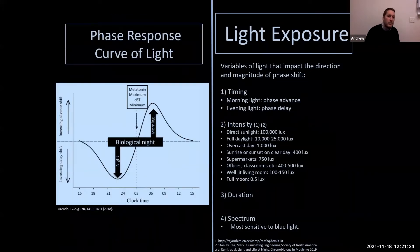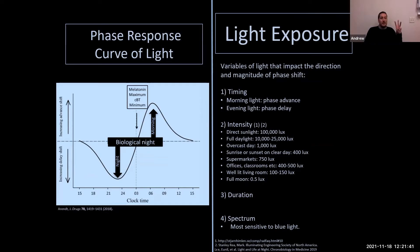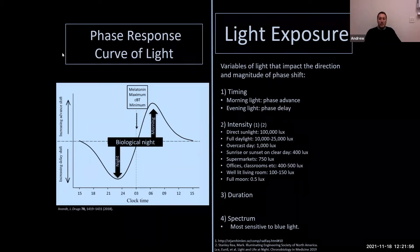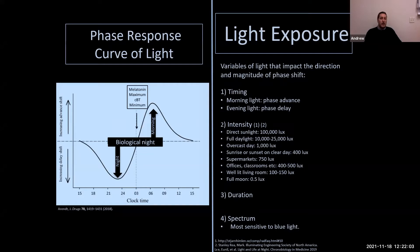There are four variables of light that impact the direction and magnitude of phase shifts: timing, intensity, duration, and spectrum of light. These can be plotted on a phase response curve where the x-axis shows time of day and the y-axis shows direction and magnitude of the phase shift — up meaning phase advance and down meaning phase delay. For timing, morning light causes a phase advance whose magnitude slowly diminishes throughout the day, and by late afternoon or early evening the same light exposure begins to cause a phase delay throughout the night.